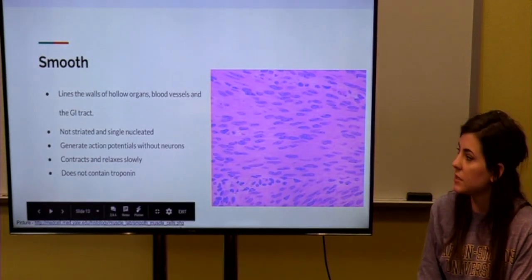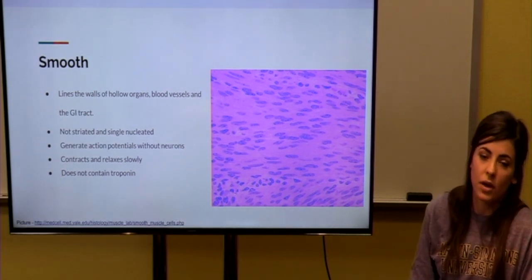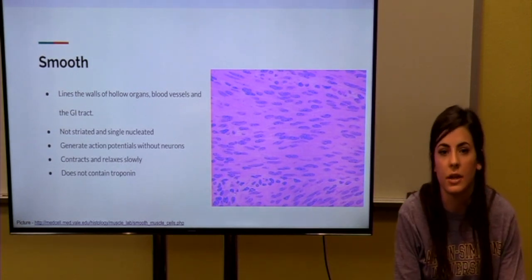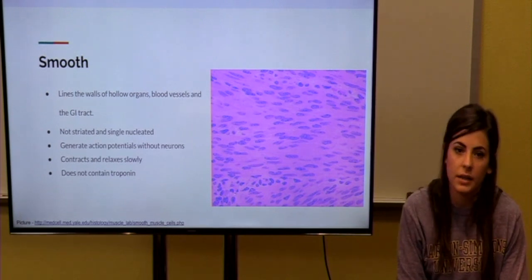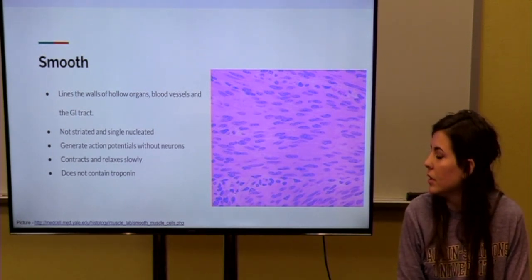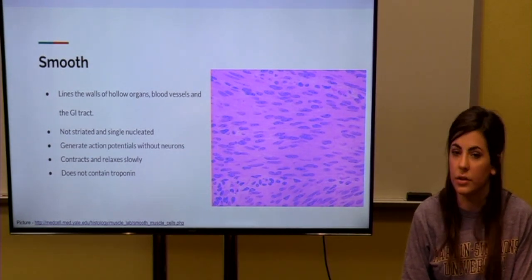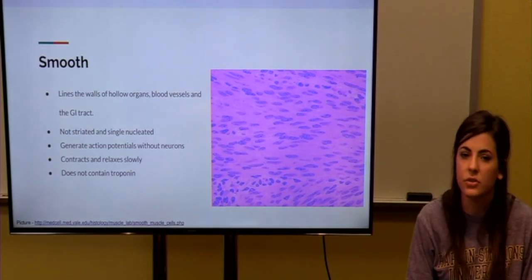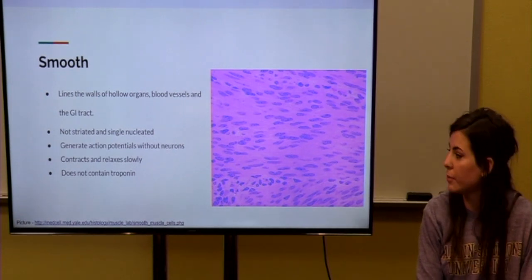The other type of muscle that we have is smooth muscle, and this is found in, or this lines the walls of hollow organs, and it surrounds our blood vessels, and it's found in the GI tract. Smooth muscle is not striated, and it's single nucleated. It generates action potentials without neurons. And the smooth muscle found in our body contracts and relaxes slowly, and it doesn't contain troponin.